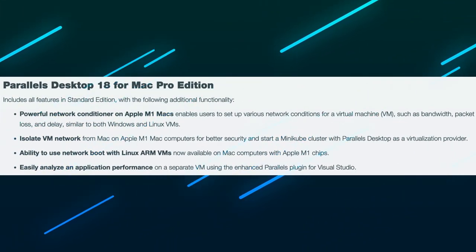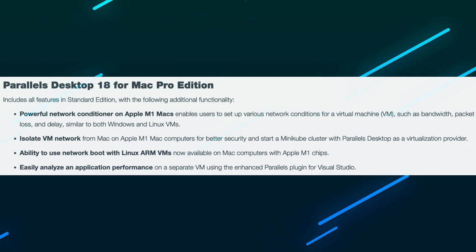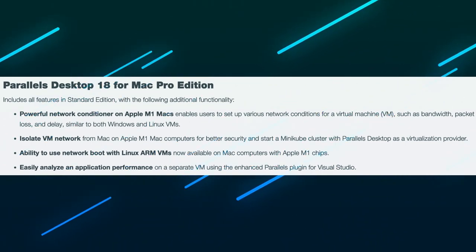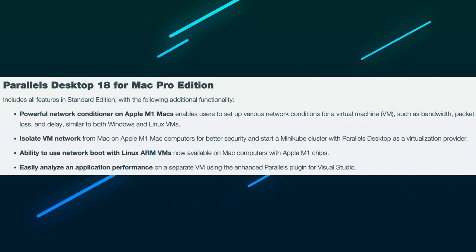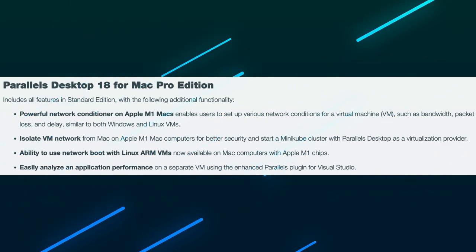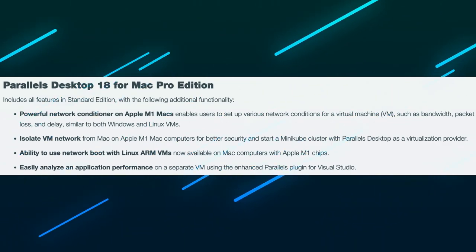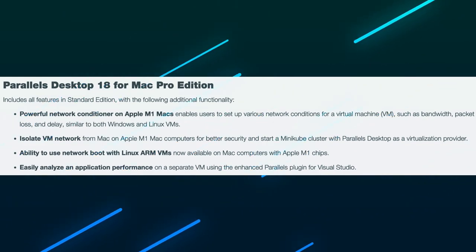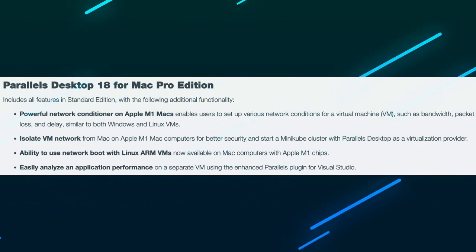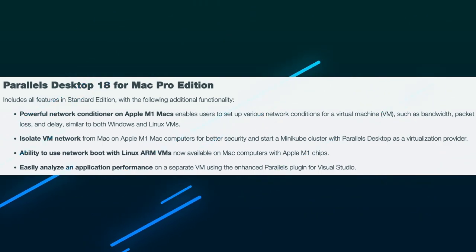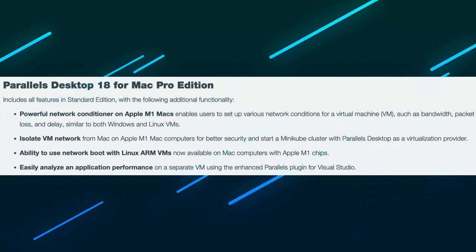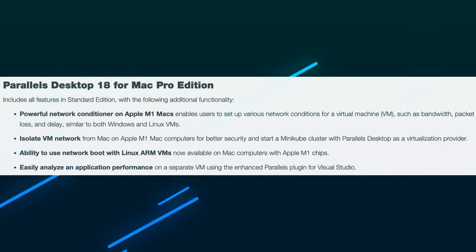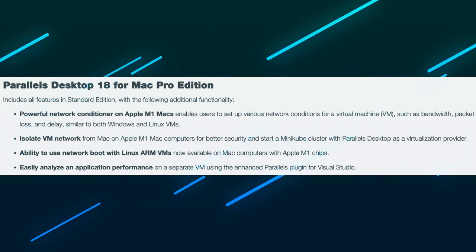The Pro Edition includes all the features of the Standard Edition, with the following additional functionality. A powerful network conditioner on Apple M1 Macs enables users to set up various network conditions for a virtual machine, such as bandwidth, packet loss, and delay, similar to both Windows and Linux virtual machines. Also included is the ability to isolate virtual machine network from Mac on Apple M1 Mac computers for better security, and to start a Minikube cluster with Parallels Desktop as a virtualization provider.